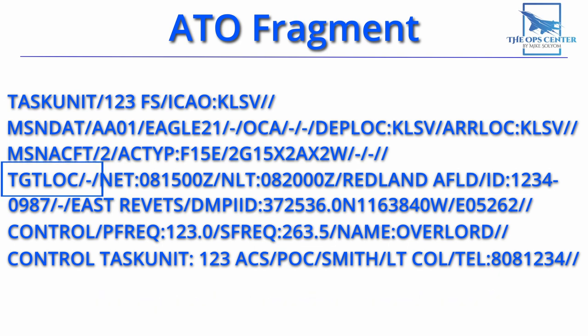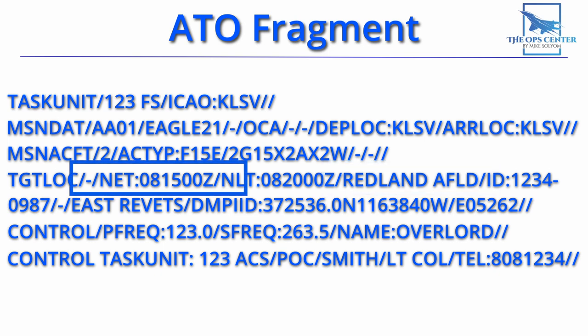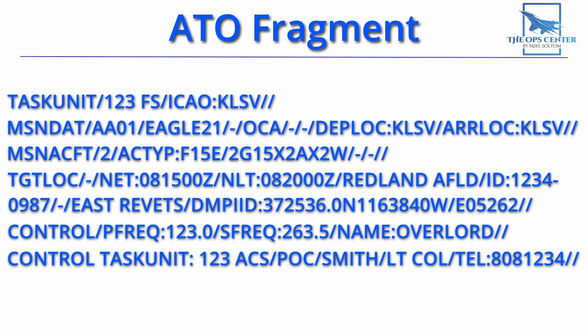The fourth line shows our target location, which is called Redland Airfield. Now we see that it has a no-earlier-than time and a no-later-than time. The Z indicates that these times are in Zulu, which is what the military calls GMT. So not only do we have a place to attack, but a time that the JFAC wants it to be attacked. The time is important because this target could be a problem for later missions — targets like early warning radars, air defenses, and air bases with interceptors need to be handled early on to make the air safe for other missions. So if there's a time listed on the ATO, it needs to be met.